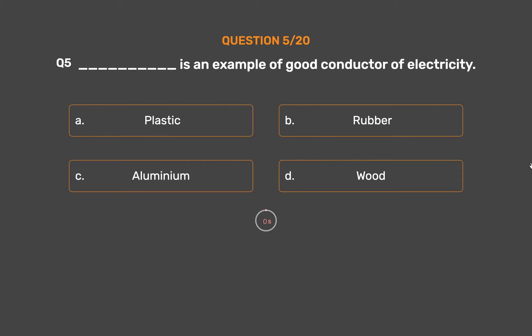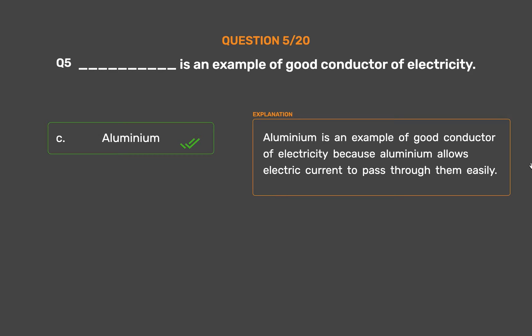The correct answer is Option C: Aluminium. Aluminium is an example of a good conductor of electricity because aluminium allows electric current to pass through it easily.